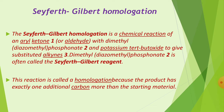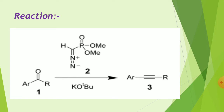The starting material has two carbons, and one additional carbon is added — that is why it is called homologation. The chemical reaction involves: first, an aryl ketone (an aromatic ketone); second, dimethyl phosphonate and potassium tert-butoxide; and the product is an alkyne with a triple bond.